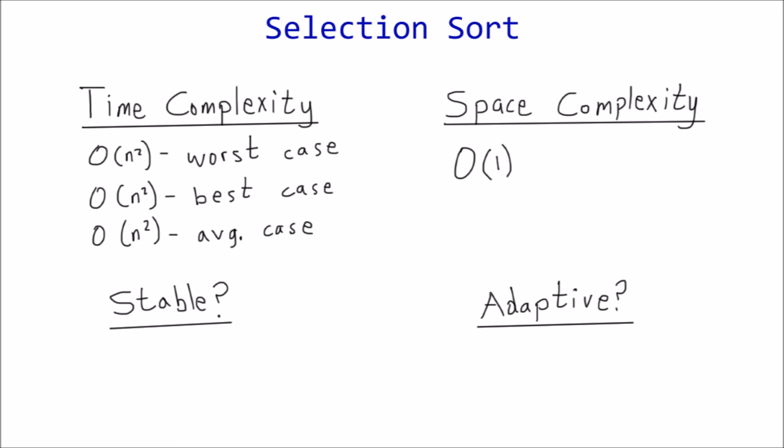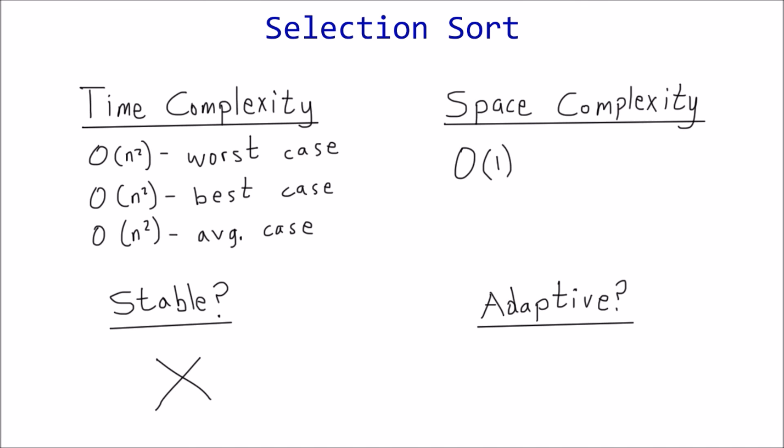Stability. A sorting algorithm is stable if the initial order of equal elements is preserved. Because selection sort swaps elements to random locations, it is not a stable algorithm. We actually saw an example of this in our C++ demonstration. Initially, the three of diamonds was positioned before the three of clubs, but this was not the case in the end state.